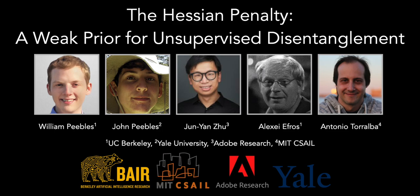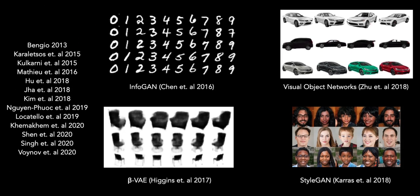Hey, I'm William Peebles, and I'll be presenting our work on the Hessian penalty, a weak prior for unsupervised disentanglement. Ample prior work has tackled the problem of learning disentangled representations, such as InfoGAN.